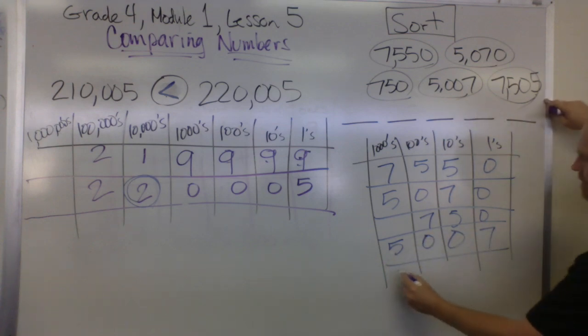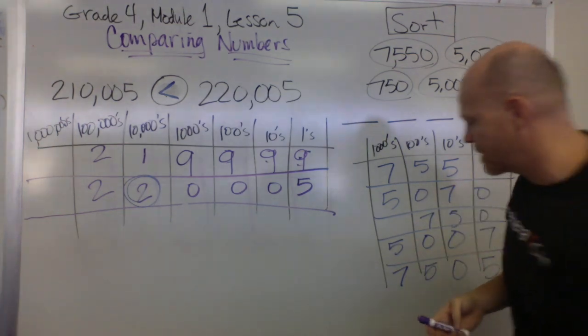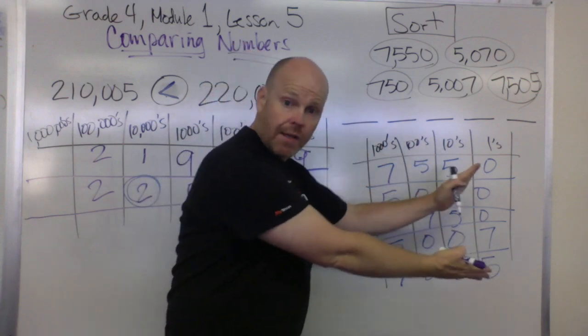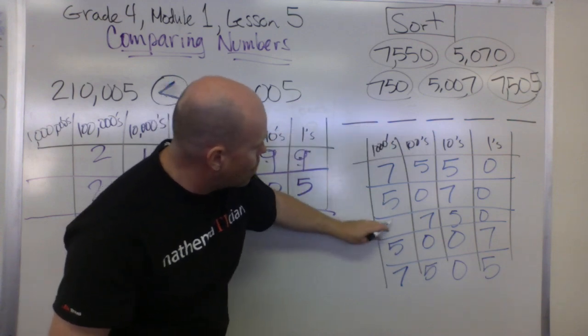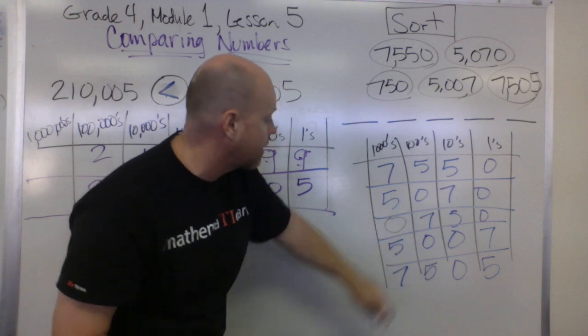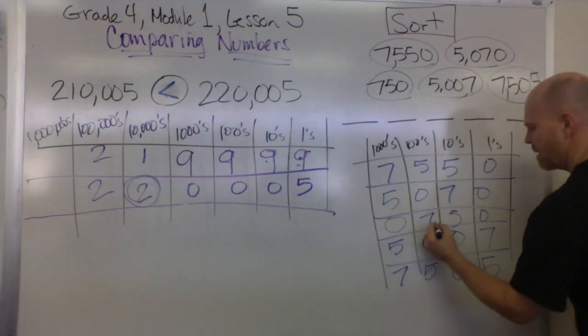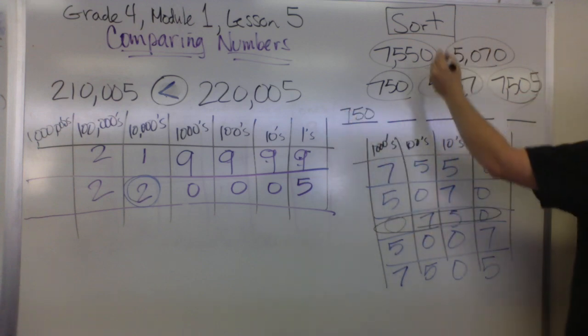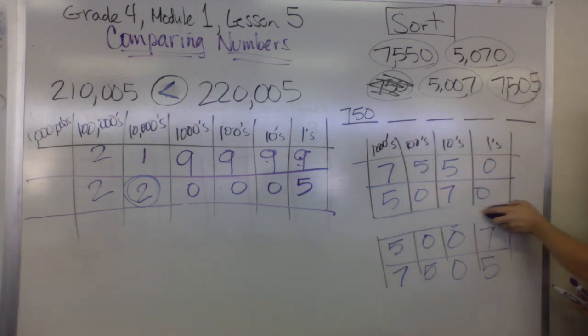In terms of going from least to greatest, we're going to start from our thousands and work our way to the smaller place values. We can see that we've got a 7, a 5, a blank—so that means that's a 0 right here—and then a 5 and a 7. So automatically we can see that this number down here is the least, so that's 750. We're done with 750, so I'm just going to erase it from the board. We don't need it anymore.